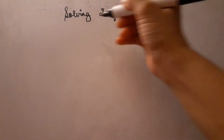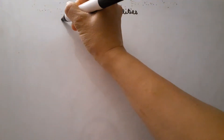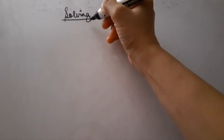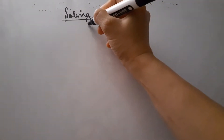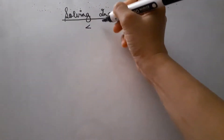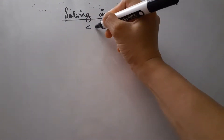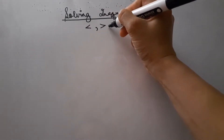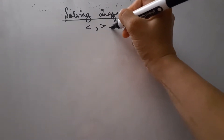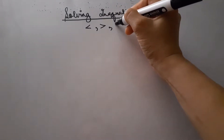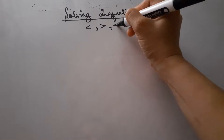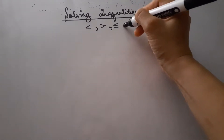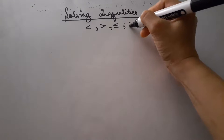Hello everyone. Our lesson for today is all about solving inequalities. In solving inequalities, there is a property of inequalities that we can follow. We can see the signs: less than, greater than, less than or equal to, or greater than or equal to.